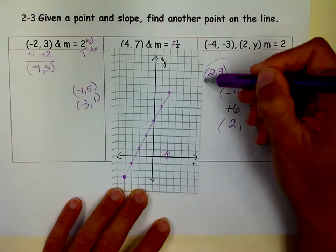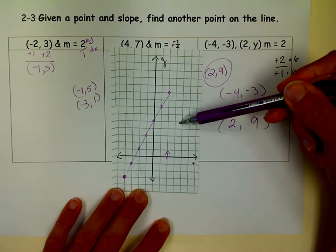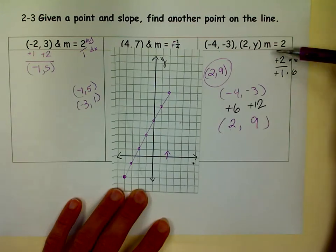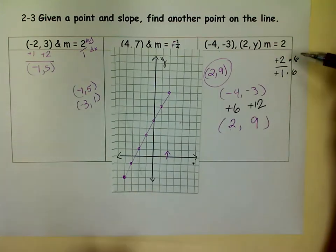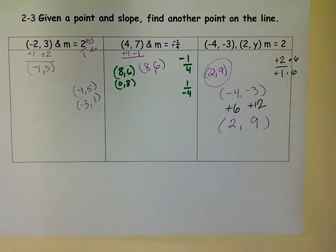which is the same point we had over here. So some people like to do the graph better. Some people just like to say, how many would I have to go up and then do the same, or up or over and do the same thing to the x and the y. So good luck with that. M squared, signing out.